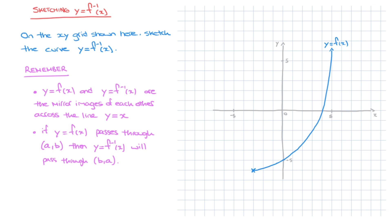So those are the two important things to remember. Firstly, a function and its inverse are the mirror images of each other across the line y equals x. And secondly, if f of x passes through a point with coordinates a, b, then its inverse function has to pass through the point with coordinates b, a. Now let's go ahead and see how to sketch the inverse function for the curve we have here.